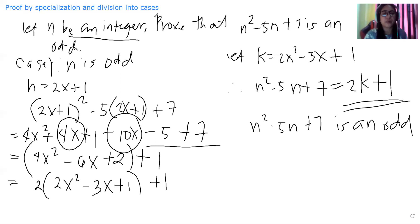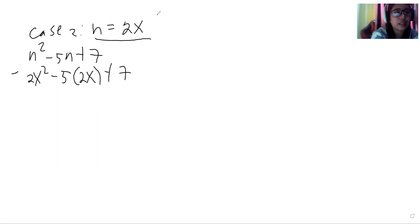For case 2, let us also consider that n is even. So n is equal to 2x. We will substitute 2x in place of n. So our equation is n squared minus 5n plus 7. This is equal to 2x squared minus 5 multiplied by 2x plus 7. And it is equal to 2x squared minus 10x plus 7.